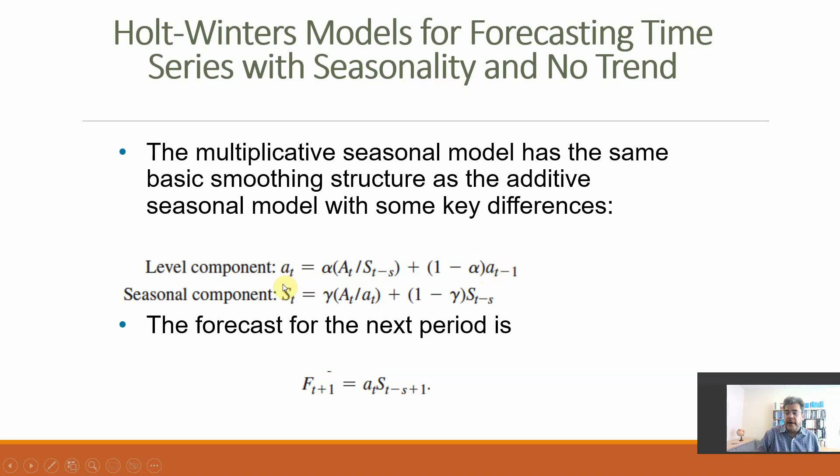The seasonal component St equals epsilon multiplied by the actual T divided by At. We need to know At first to calculate St. Plus 1 minus epsilon multiplied by St minus S. What is this S? If we're working with monthly numbers, the seasonality is 12 months, so S is 12. If working with quarterly numbers, S is 4. The forecast for the next period is At times St minus S plus 1.